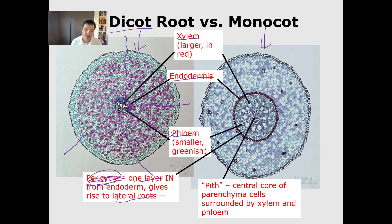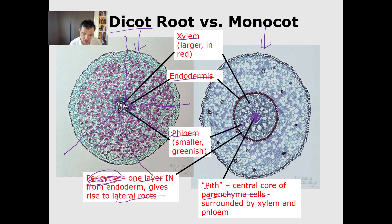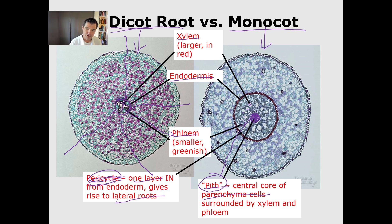In a monocot root, you have the xylem and phloem arranged differently. Inside that there's a region of parenchyma cells that offer support for the root, and collectively we call that the pith. The key difference is that there is a pith in a monocot root, but there is not a pith in a dicot root. This becomes important in identification later on because it's the opposite when we talk about stems.